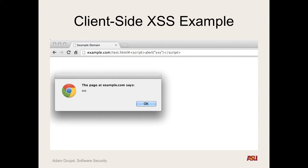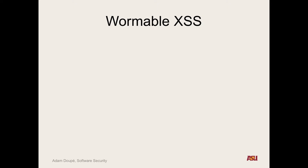We talked about the different types of cross-site scripting vulnerabilities: reflected, stored, and client-side cross-site scripting. One of the really cool things that can happen with stored cross-site scripting is that XSS can be wormable. So what's a computer worm?